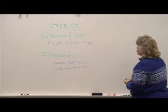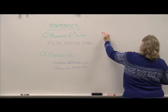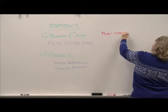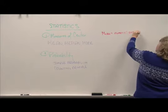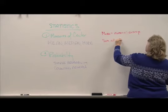And in probability, we're primarily going to be concerned with simple probability and the counting principle. So those are the two areas we're going to look at. Now, mean, median, and mode. The mean is the numeric average, which is to say, you sum all values, and you divide by the number.